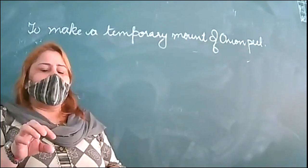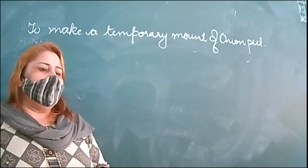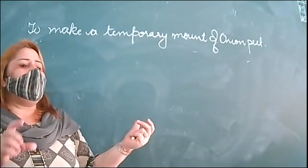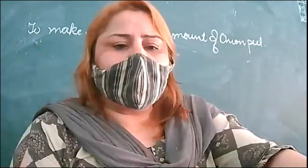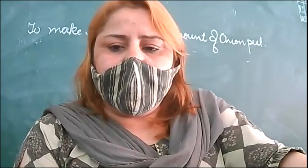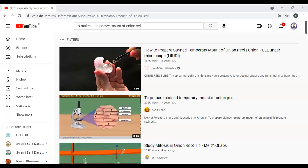Add methylene blue or saffranin over it. Cover it with the cover slip and observe under the microscope. You will see the compartments of the cell. Now I am going to share the screen to show you a video on making a temporary mount of onion peel.